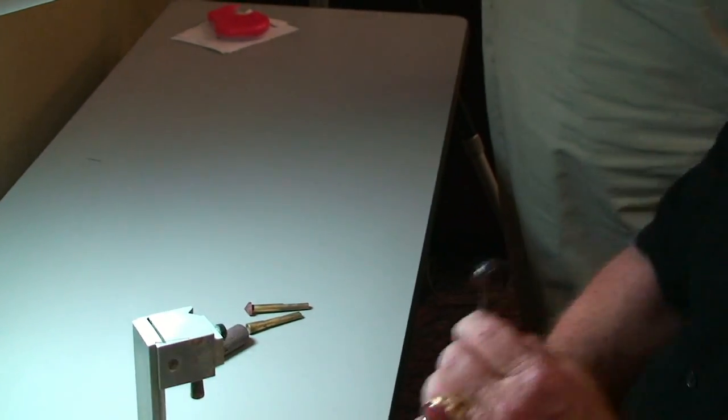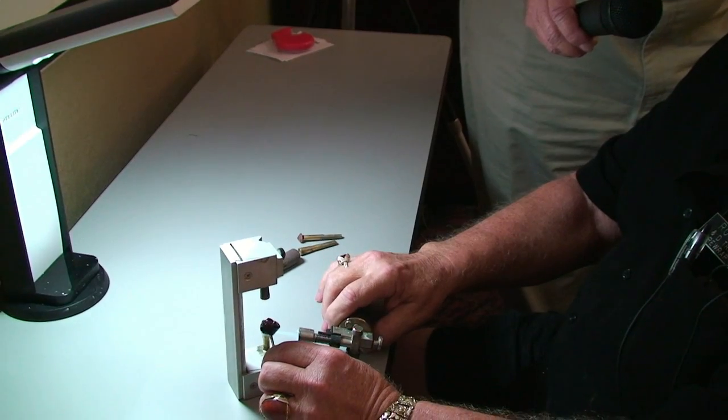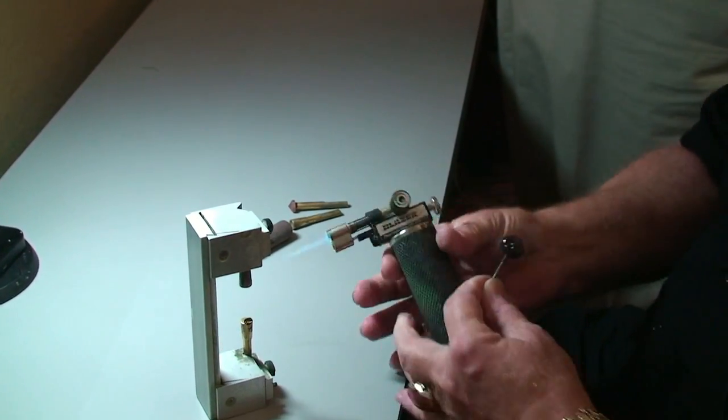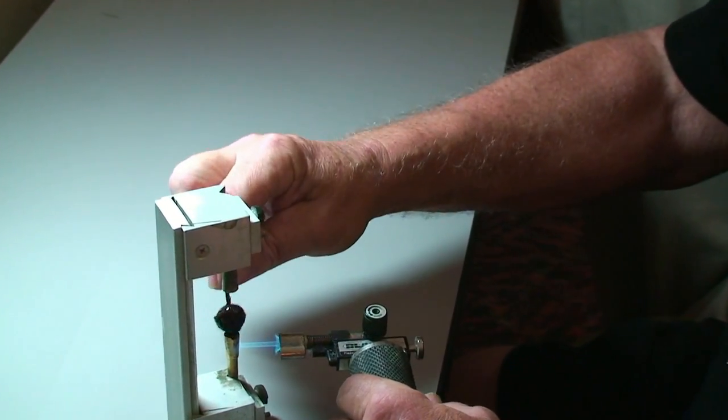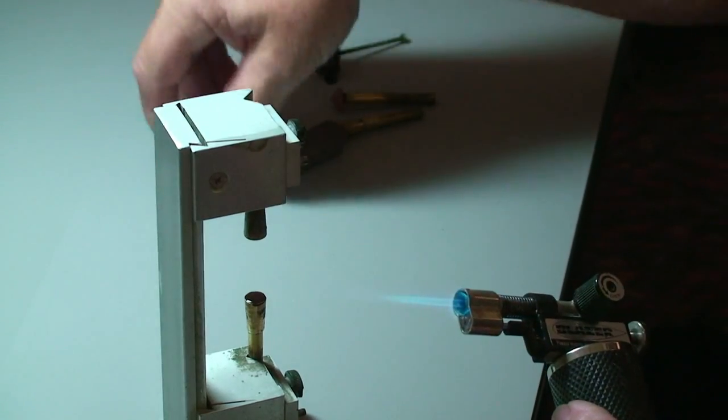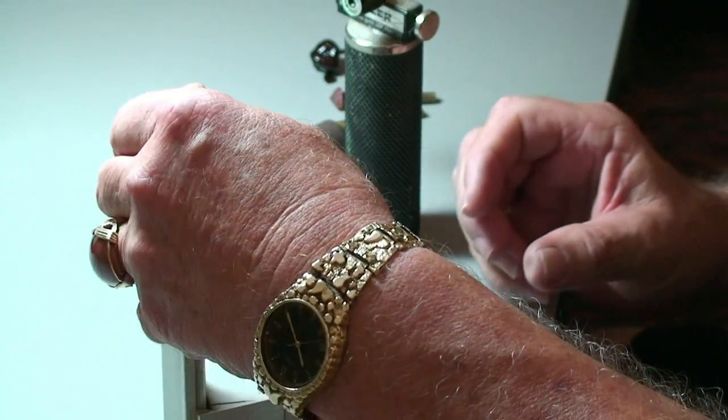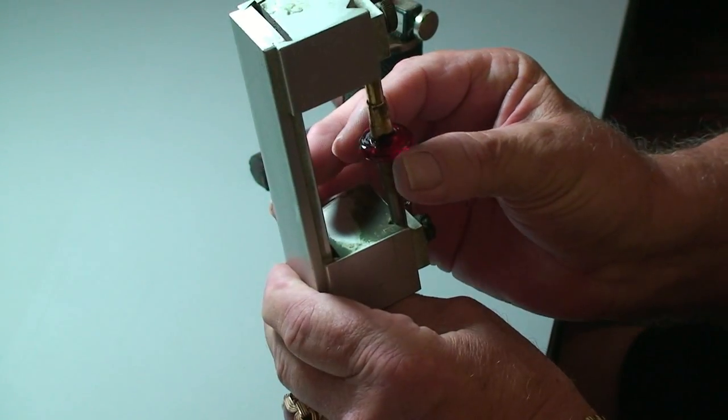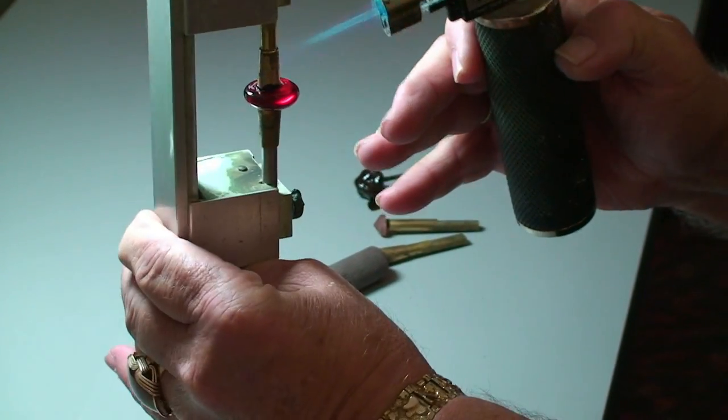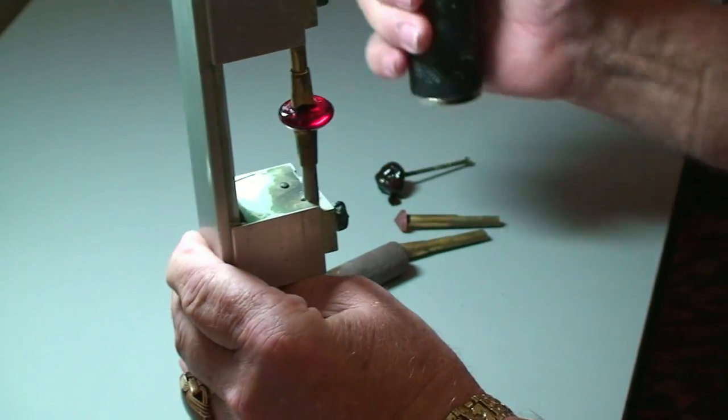First thing I do is turn on my little butane torch, and I heat the DOP that I'm going to attach the stone to hot enough to where I can get some wax melted on it. And then I take the piece of rough, and I position it on that DOP. Then I close the transfer jig so it's held securely, and I move it to where I know it's in the center, and I use a little bit more heat, just enough to melt the wax onto the stone.